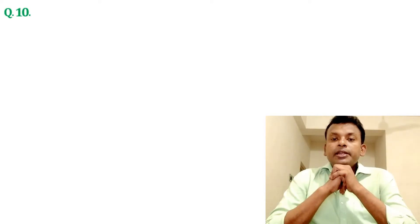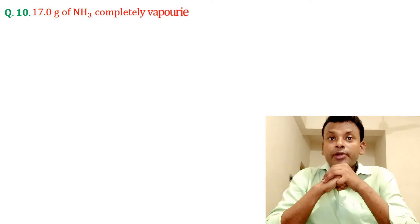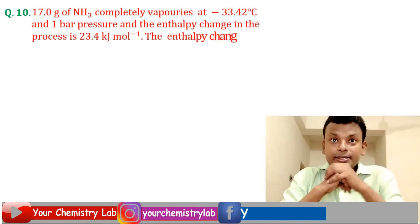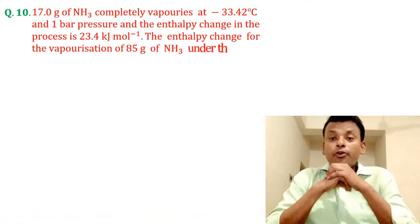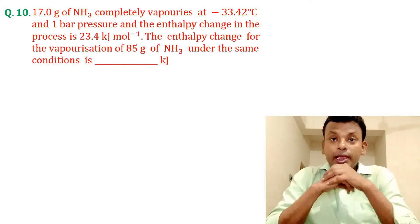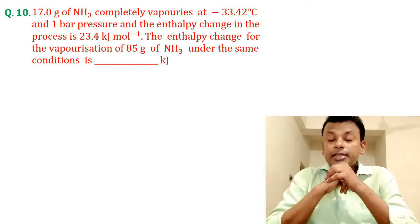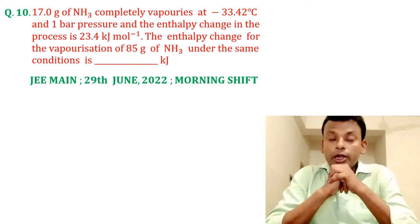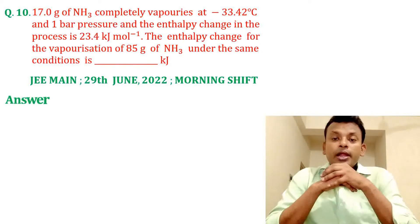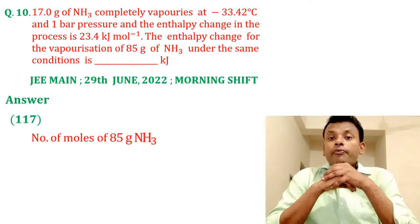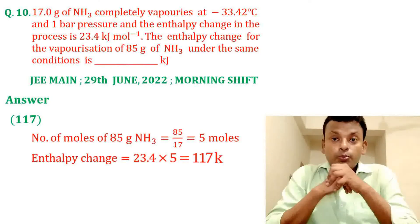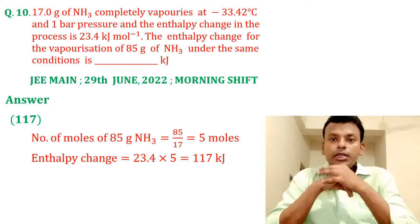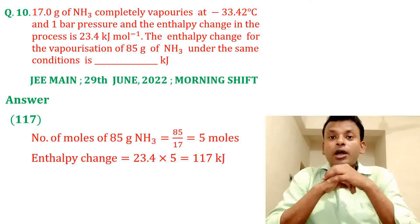Question 10. 17.0 g of NH₃ is completely vaporized at −33.42°C and 1 bar pressure. The enthalpy change in the process is 23.4 kJ/mol. The enthalpy change for vaporization of 85 g of NH₃ under the same conditions is asked in kJ. This question was set in JEE Main 29th June 2022 morning shift. Answer is 117. Number of moles of 85 g NH₃ = 85/17 = 5 moles. Enthalpy change = 23.4 × 5 = 117 kJ.